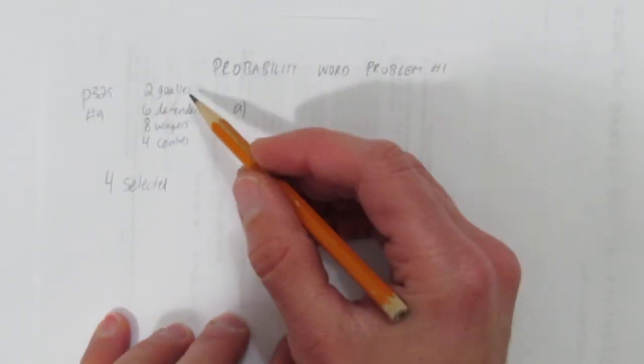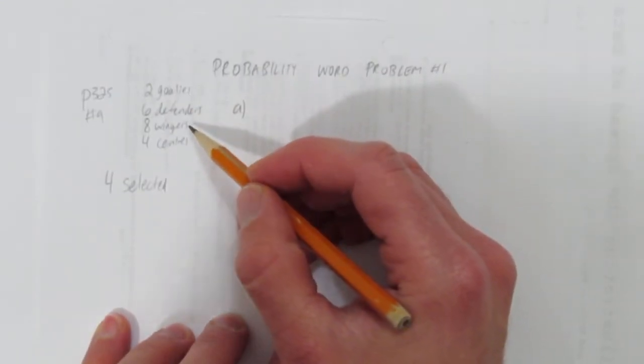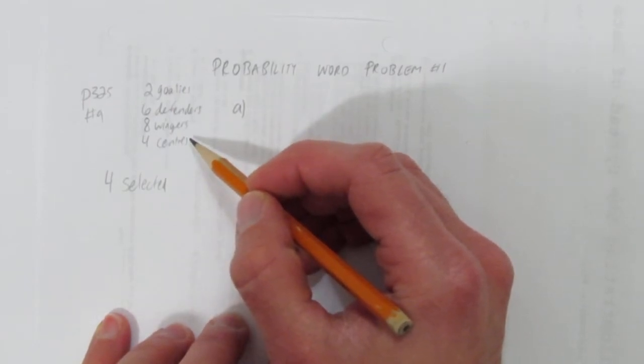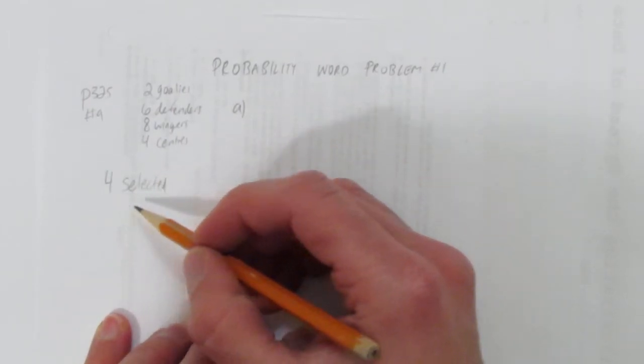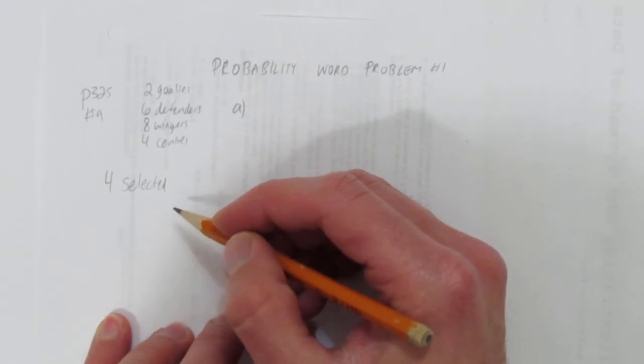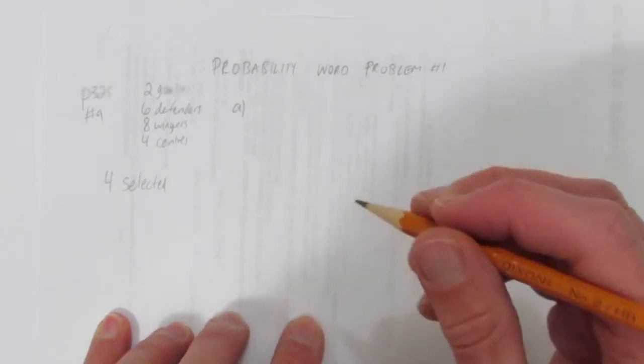a hockey team has two goalies, six defenders, eight wingers, and four centers. If the team randomly selects four players to attend a charity function, what is the likelihood that they are all wingers?